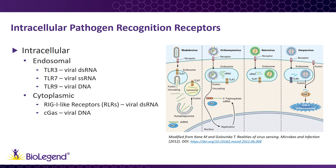Intracellular PRRs can be categorized as endosomal or cytoplasmic. It is important for the host to have detection methods in both locations, since some viruses reveal their genetic material in endosomes, and others reveal their genetic material in the cytoplasm. Endosomal PRRs include TLR3 and TLR7, which detect double-stranded and single-stranded viral RNA, respectively. TLR9 detects viral DNA.